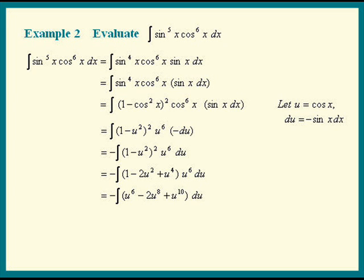Next, apply the power rule to each term and distribute the negative sign. We get negative u to the 7th over 7 plus 2 times u to the 9th over 9 minus u to the 11th over 11 plus c.